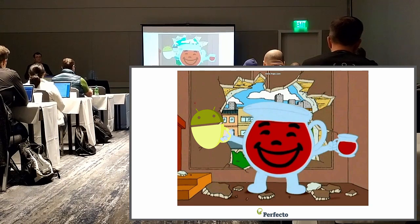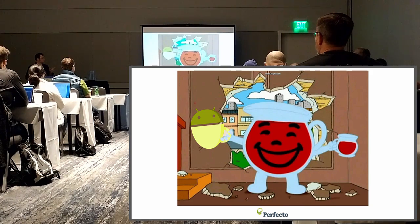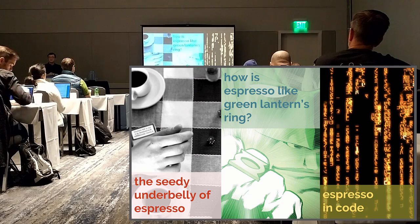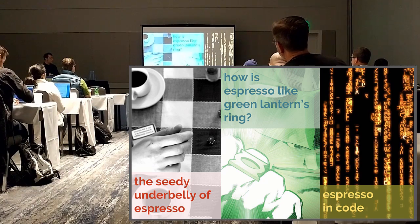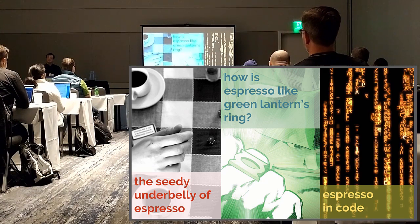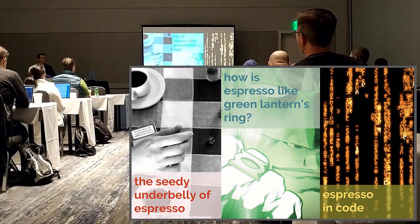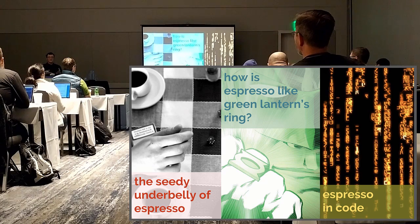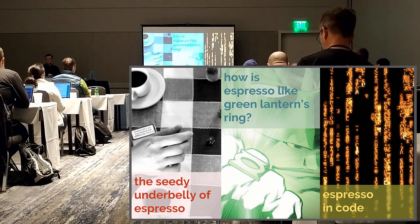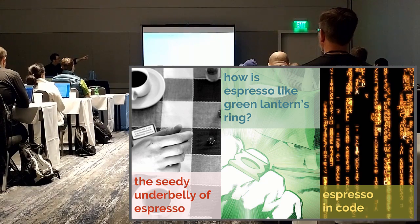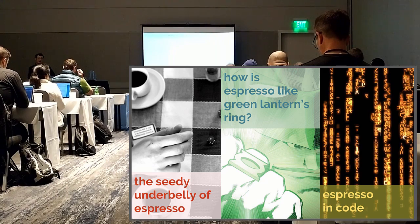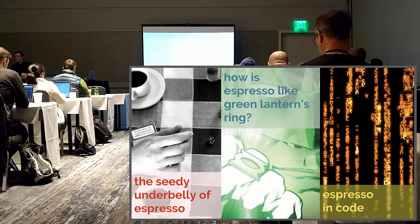I've decided to mini-series this session. I've got a couple of episodes I'm going to ask you to vote on — which should we do first? If you want to take out your phones: 'The CD Underbelly of Espresso' is about the gory details of how Espresso works, particularly with ADB and the debug bridge. 'How Espresso is Like Green Lantern's Ring' is my satirical, lightweight take. And 'Espresso in Code' is a couple of code examples for those new to it. Go to that URL and drag and drop your order.